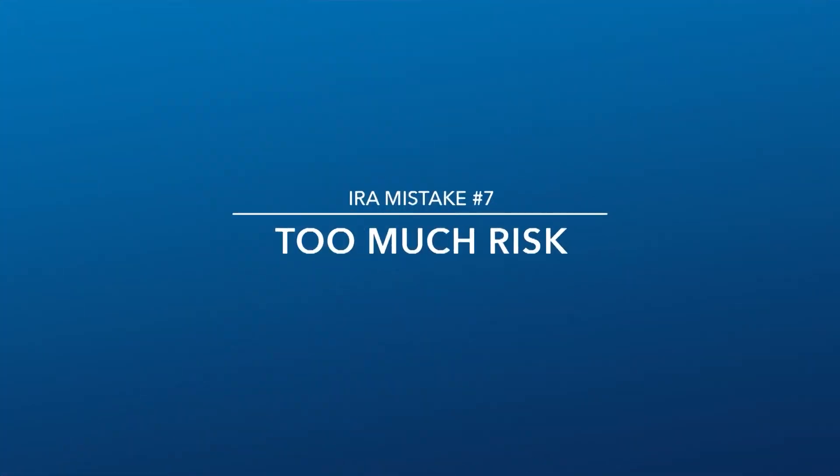Mistake number seven: taking too much investment risk — inside the IRA and outside the IRA, really with your whole portfolio. You want to make sure you're taking the adequate amount of risk. You need to take enough risk to accomplish your retirement vision, which means you need to beat taxes, beat inflation — which is a challenge for a lot of people right now — and grow it on top of that. So there's a minimum amount of risk you want to take within your overall investment portfolio.